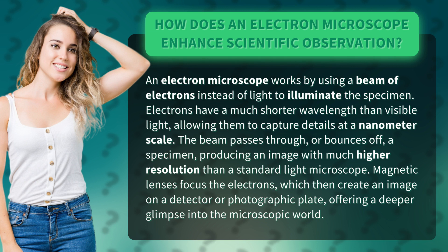The beam passes through, or bounces off, a specimen, producing an image with much higher resolution than a standard light microscope. Magnetic lenses focus the electrons, which then create an image on a detector or photographic plate, offering a deeper glimpse into the microscopic world.